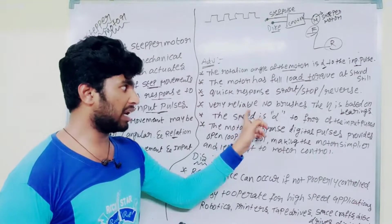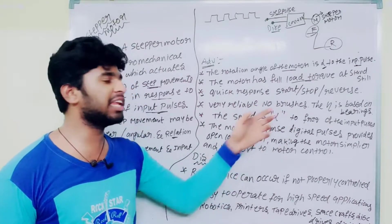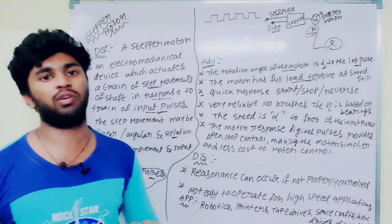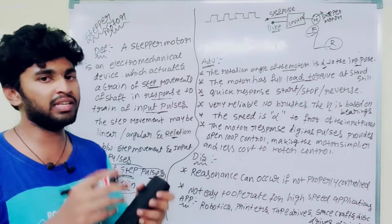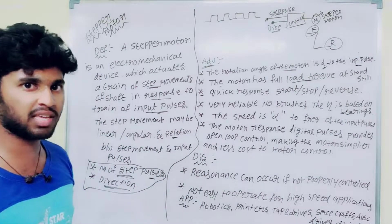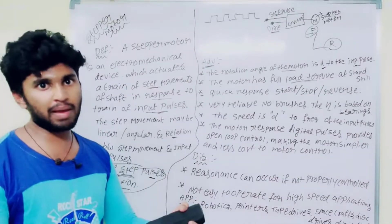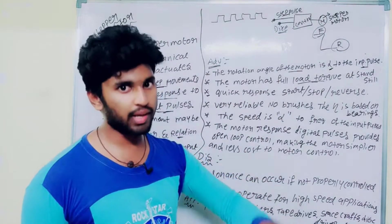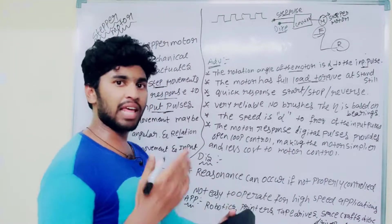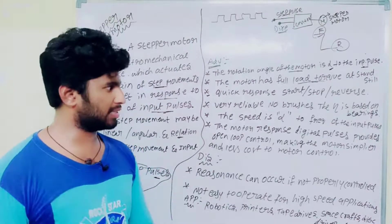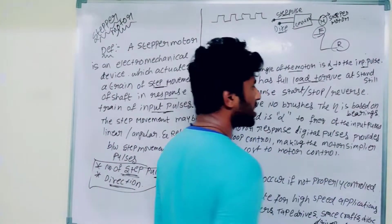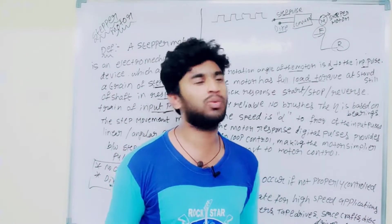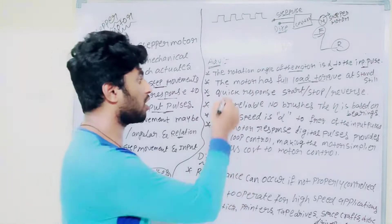The fourth point is that it is very reliable because there is no brush contact. The efficiency depends on bearings. In the inputs there are permanent magnets and electro-magnets — permanent magnets are in the rotor and electro-magnets are in the stator. The bearings are dependent on lubrication provided, and then the efficiency of the motor will increase. So this is a great advantage.